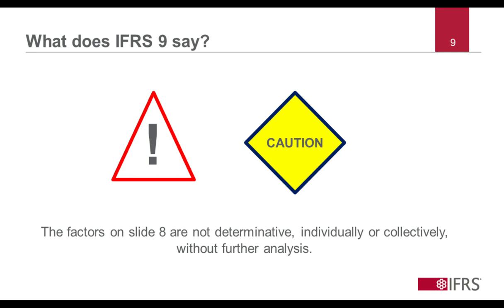Applying IFRS 9, the factors on slide 8 may be relevant to an entity's analysis of a prepayment feature, and a prepayment amount that reflects one or more of those factors may indeed meet the SPPI test, making such a prepayable financial asset eligible to be measured at amortized cost or fair value through other comprehensive income. But the factors on slide 8 are not sufficient, either individually or collectively, to conclude that a prepayment feature meets the SPPI test in IFRS 9. An entity must perform further analysis to determine whether the prepayment feature meets the SPPI test.